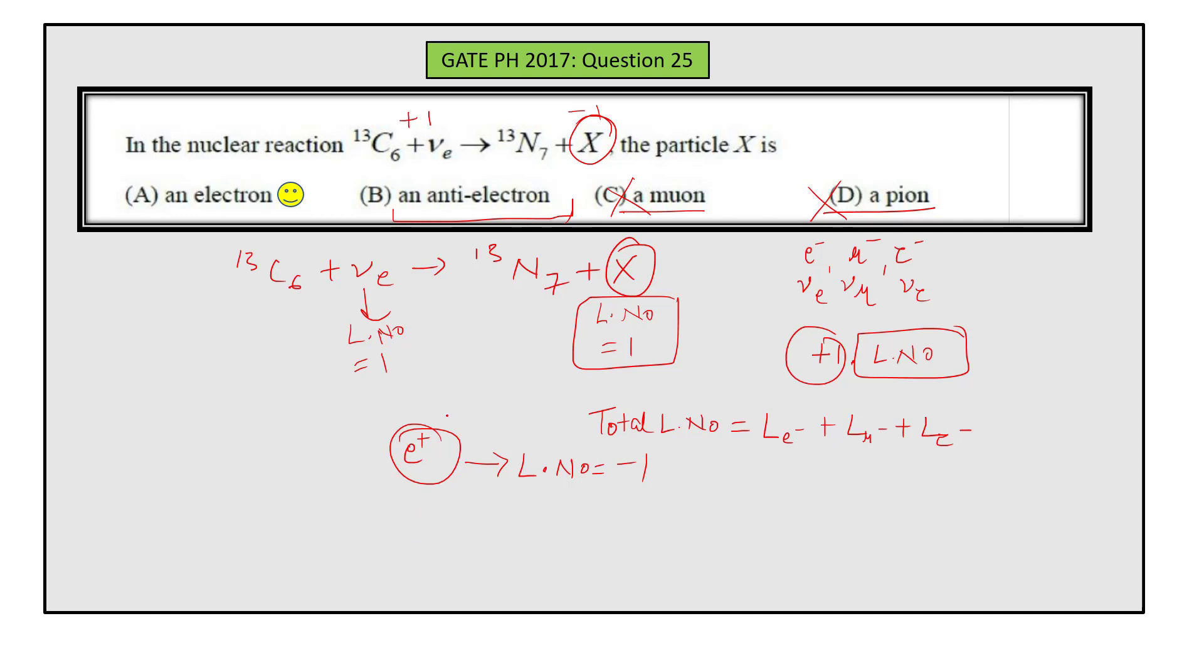That means lepton number value is not conserved on both sides, so this is also wrong.